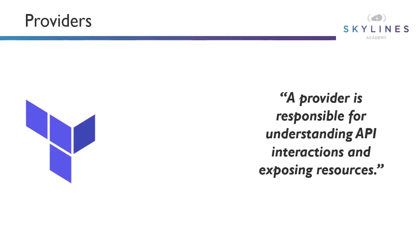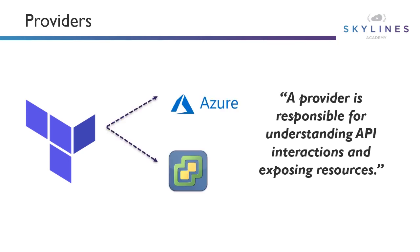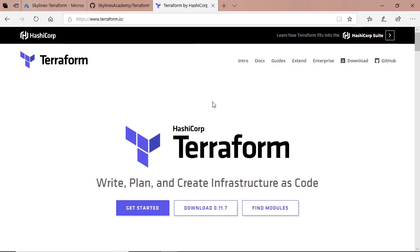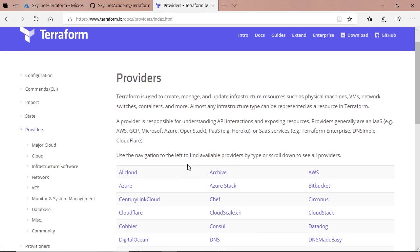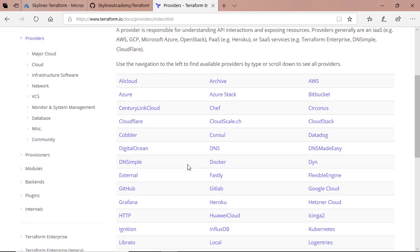Let's begin by talking about providers. At the heart of everything, a provider is responsible for understanding API interactions and exposing resources on your targets. Think of your targets — it could be Azure, it could be VMware, it could be AWS, or any number of providers available to you. If we go to the Terraform documentation on their website and expand the docs and scroll down, you'll see providers listed there for all sorts of clouds and other options.